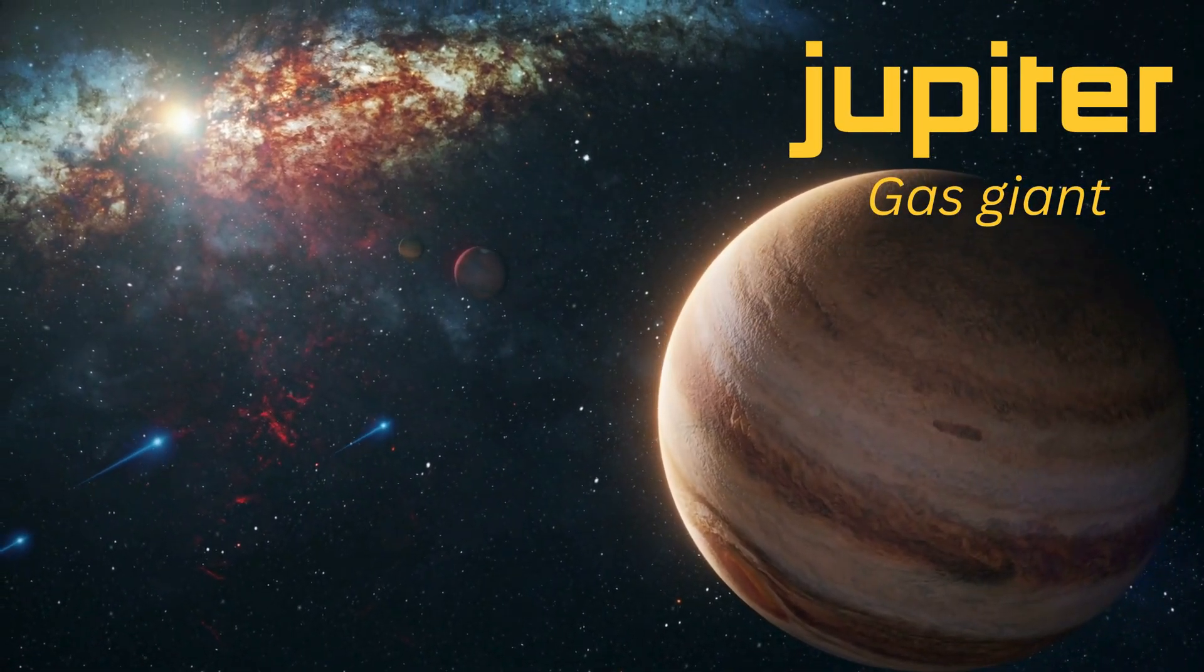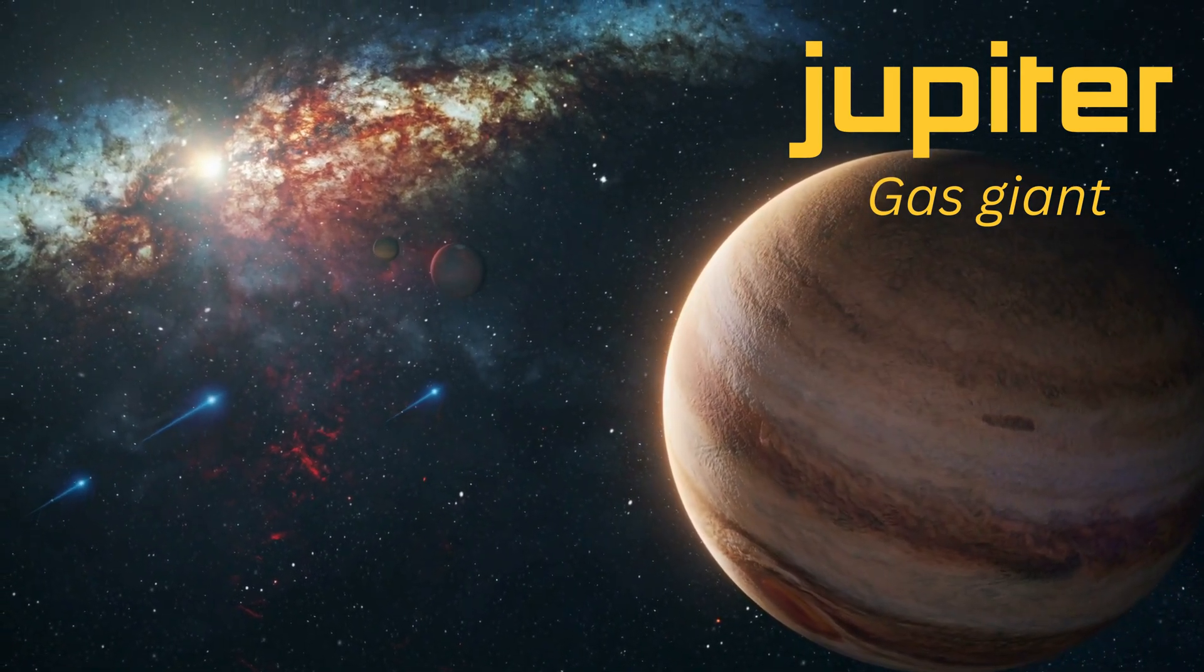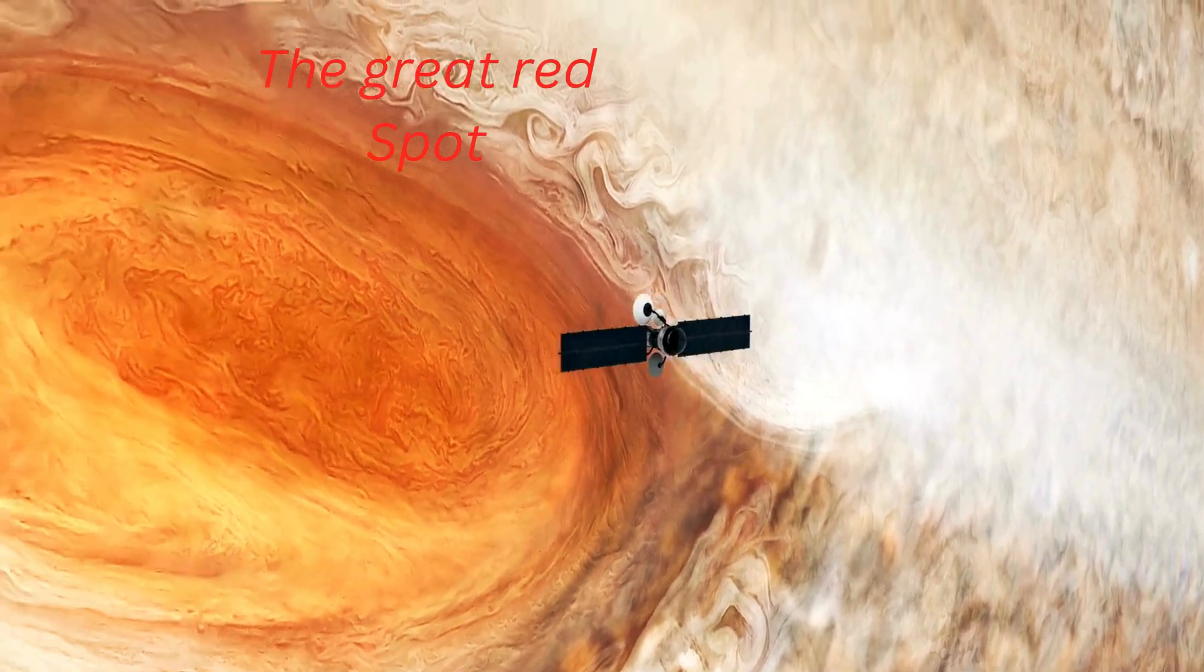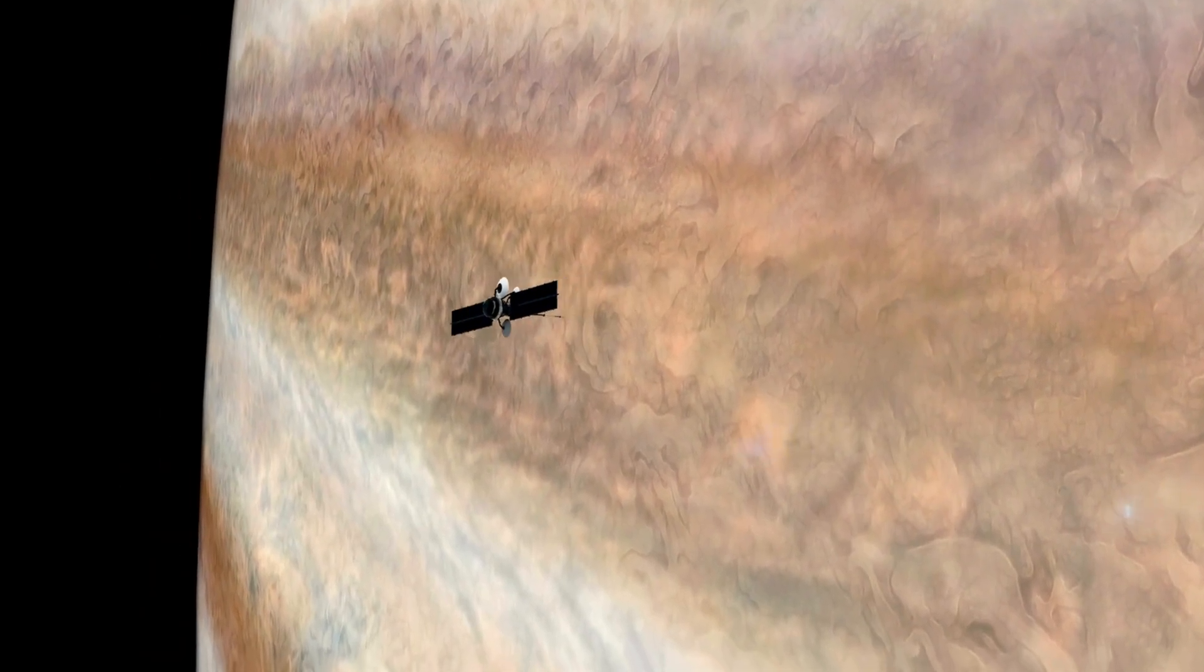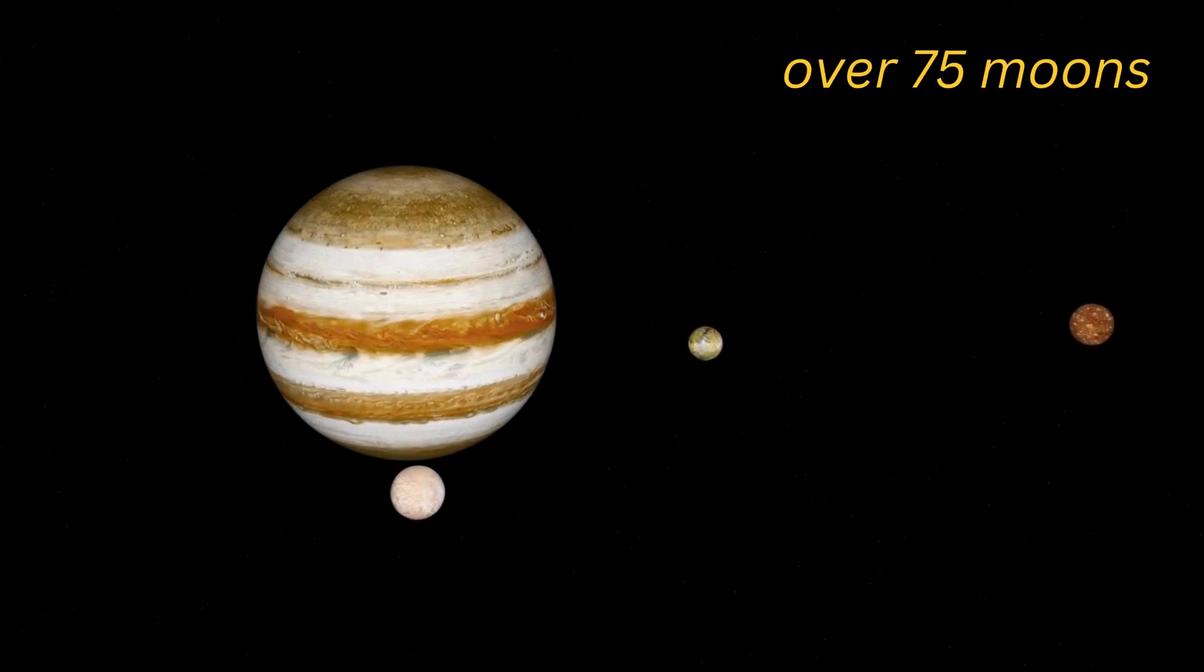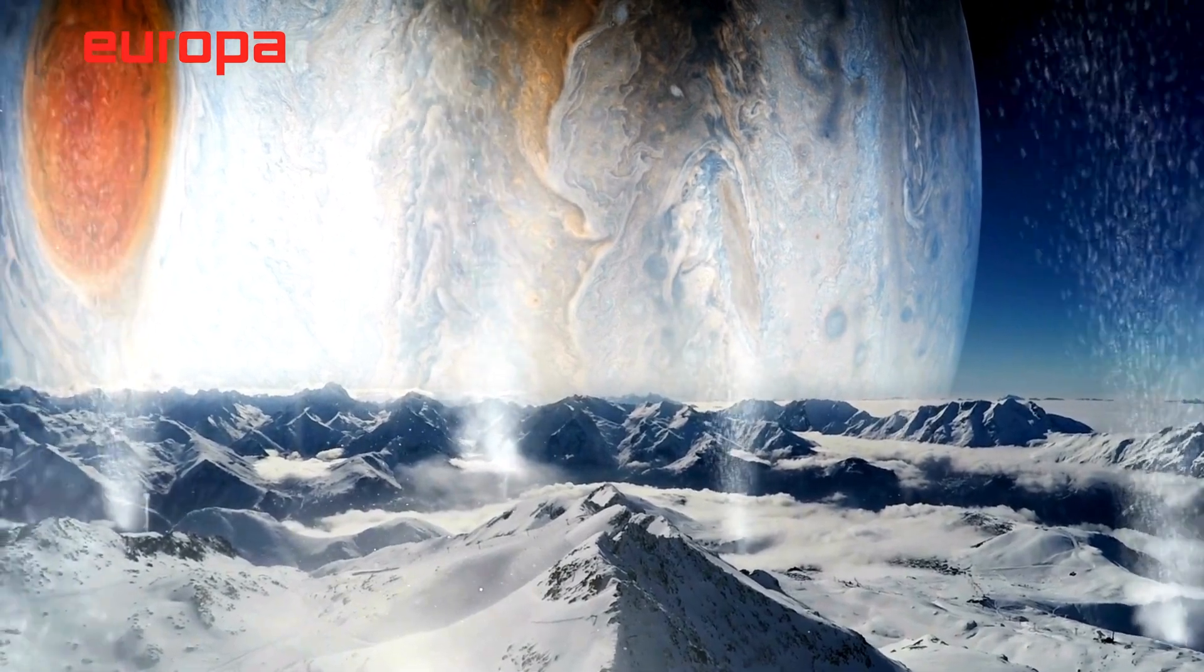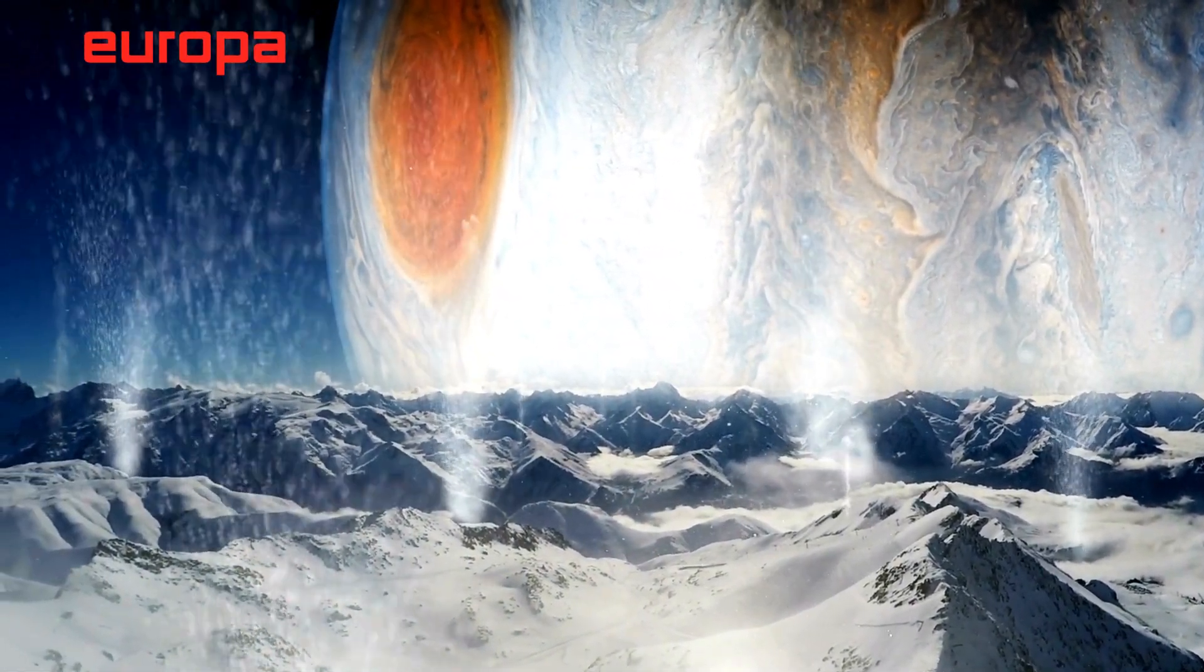Jupiter is a gas giant, which means it's mostly made of gas and doesn't have a solid surface like Earth. And check out that big, swirling storm on Jupiter called the Great Red Spot. It is a giant hurricane that's been raging for over 300 years, and it's bigger than Earth. Jupiter also has more than 75 moons. One of its moons, called Europa, might have an ocean beneath its icy surface. Could there be life there? Who knows?